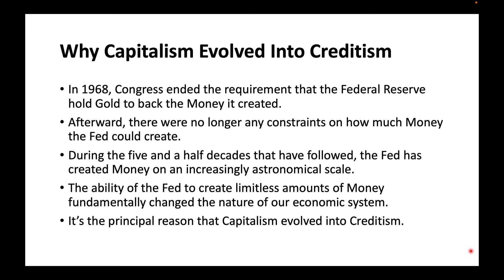In 1968, Congress ended the requirement that the Federal Reserve hold gold to back the money it created. Afterward, there were no longer any constraints on how much money the Fed could create. During the five and a half decades that have followed, the Fed has created money on an increasingly astronomical scale. The ability of the Fed to create limitless amounts of money fundamentally changed the nature of our economic system. It's the principal reason that capitalism evolved into creditism.